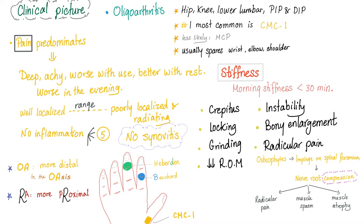No inflammation means no synovitis. The joints involved are the DIP, the PIP, and the first CMC. DIP — distal interphalangeal joint — these are called Heberden nodes. The proximal ones are Bouchard nodes. These are the first carpometacarpal joints. Osteoarthritis is more distal — DIP and PIP. Rheumatoid arthritis, on the other hand, involves the wrist, MCP, and PIP. So osteoarthritis is more distal; rheumatoid is more proximal.